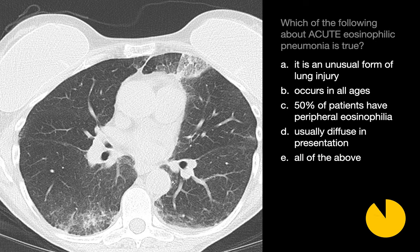Which of the following statements about acute eosinophilic pneumonia is true? All four statements are true. It's an unusual lung injury response pattern. Unlike chronic eosinophilic pneumonia, it occurs in patients of all ages. Half of patients — rather than most — have peripheral eosinophilia, and the presentation is usually diffuse rather than multifocal on imaging.